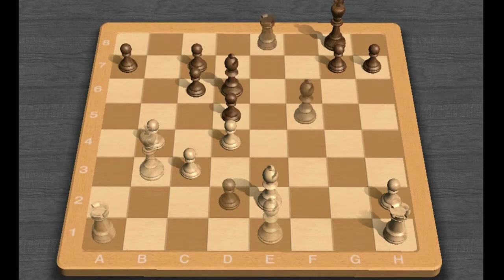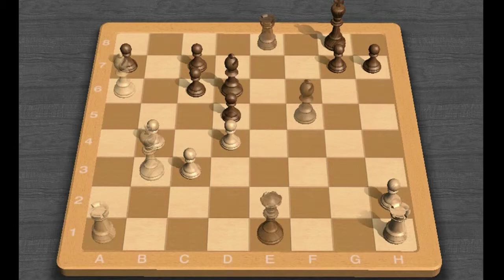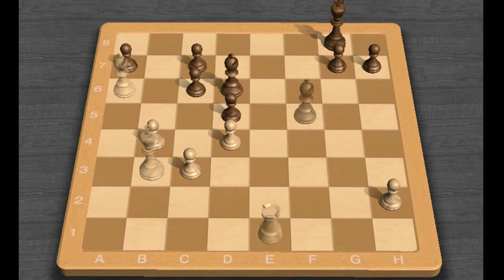Gary Kasparov thinks Black is slightly better after the further Bishop A6, D captures E1 promoting to Queen, Rook H captures E1, Rook takes E1, Rook captures E1.